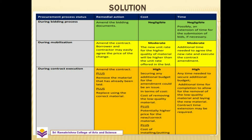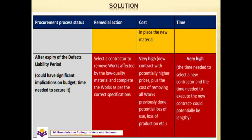The additional time for completion would allow for the removal of low quality material and laying of the new material — a contract time extension may be required. At the final stage of the procurement process, after expiry of the defects liability period, if defects are found, it could have significant implications on budget and time. The remedial action would be to select a new contract to remove works affected by the low quality material and complete the works as per the correct specification. The cost would be very high, including a new contract at potentially higher price, plus the cost of removing all works previously done, potential loss of use, and loss of production.